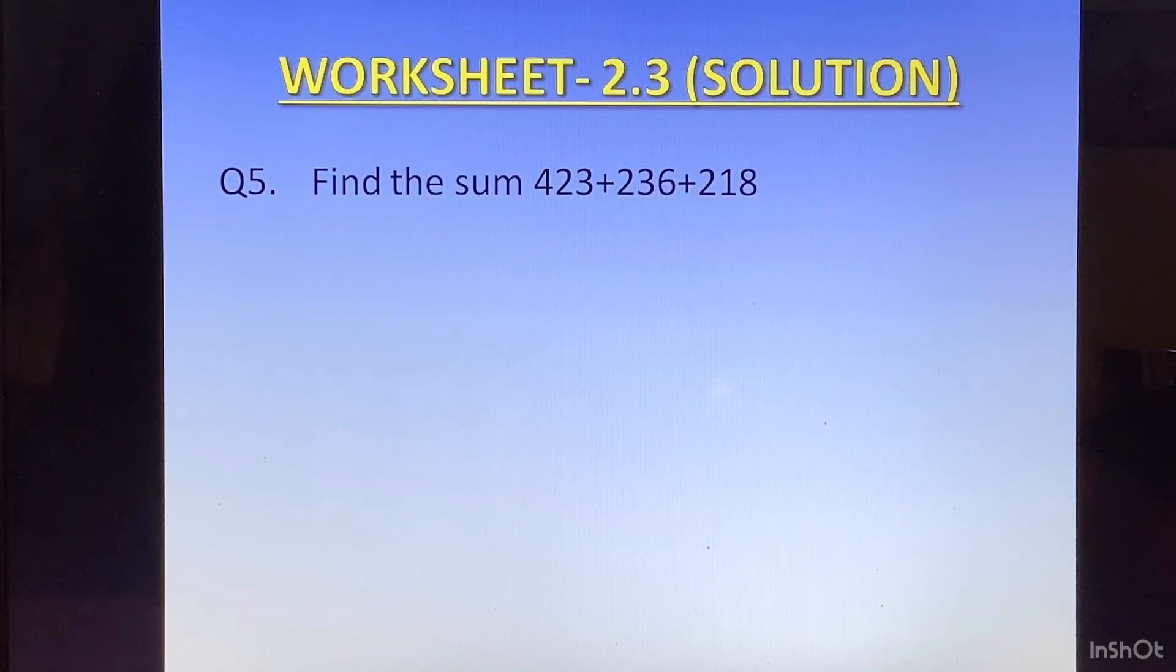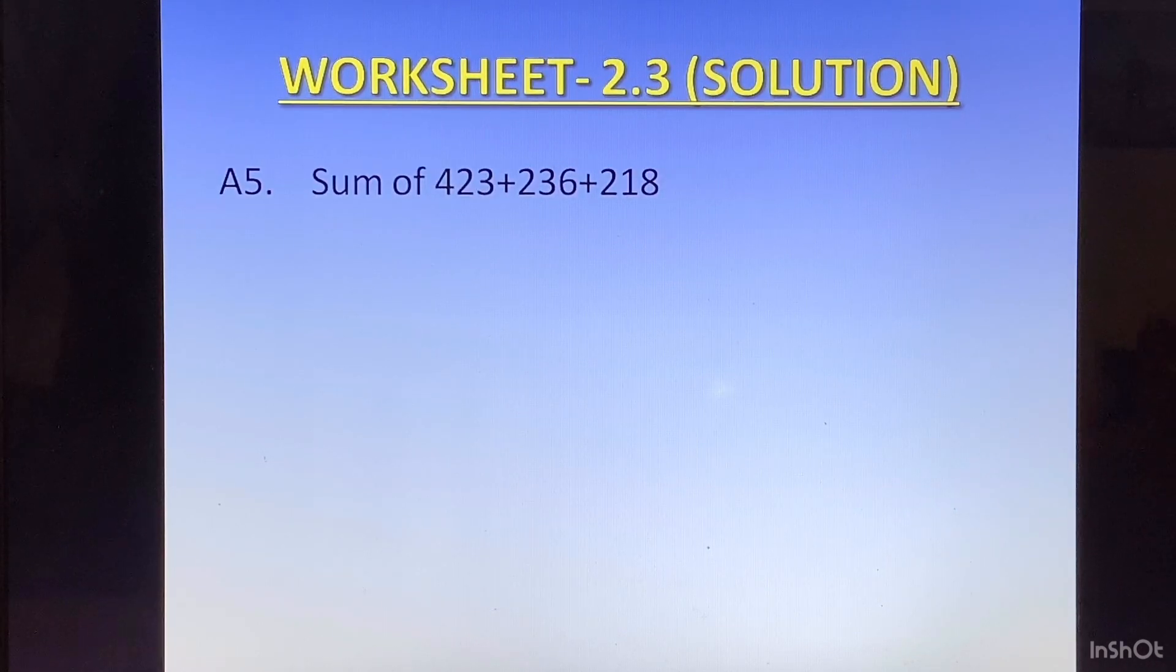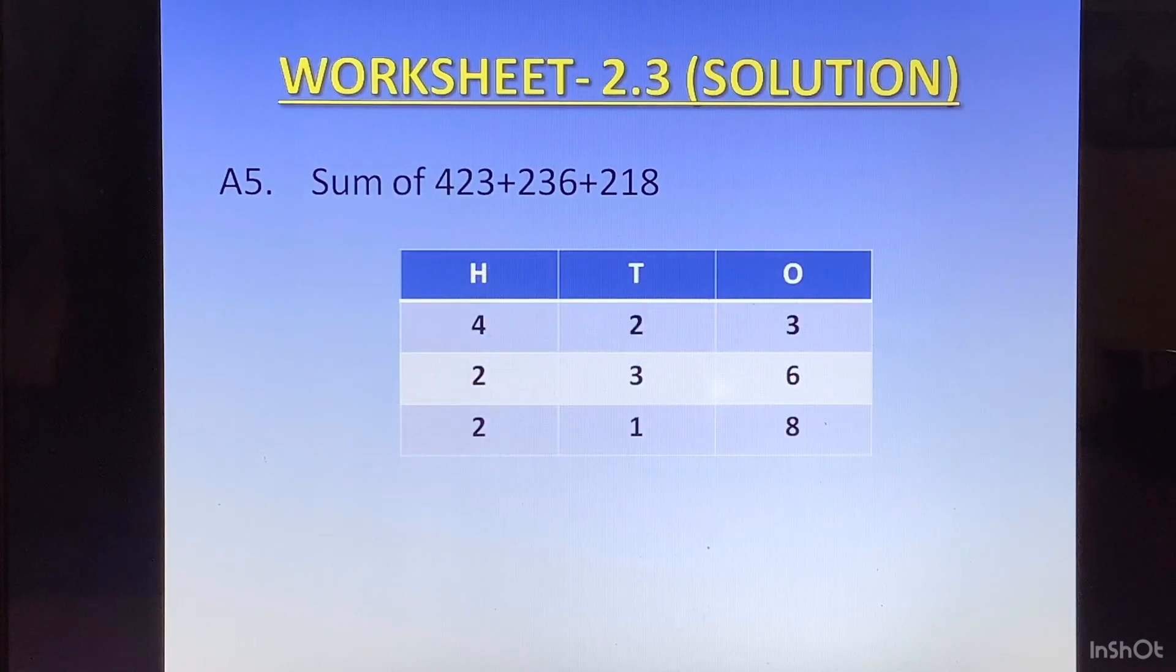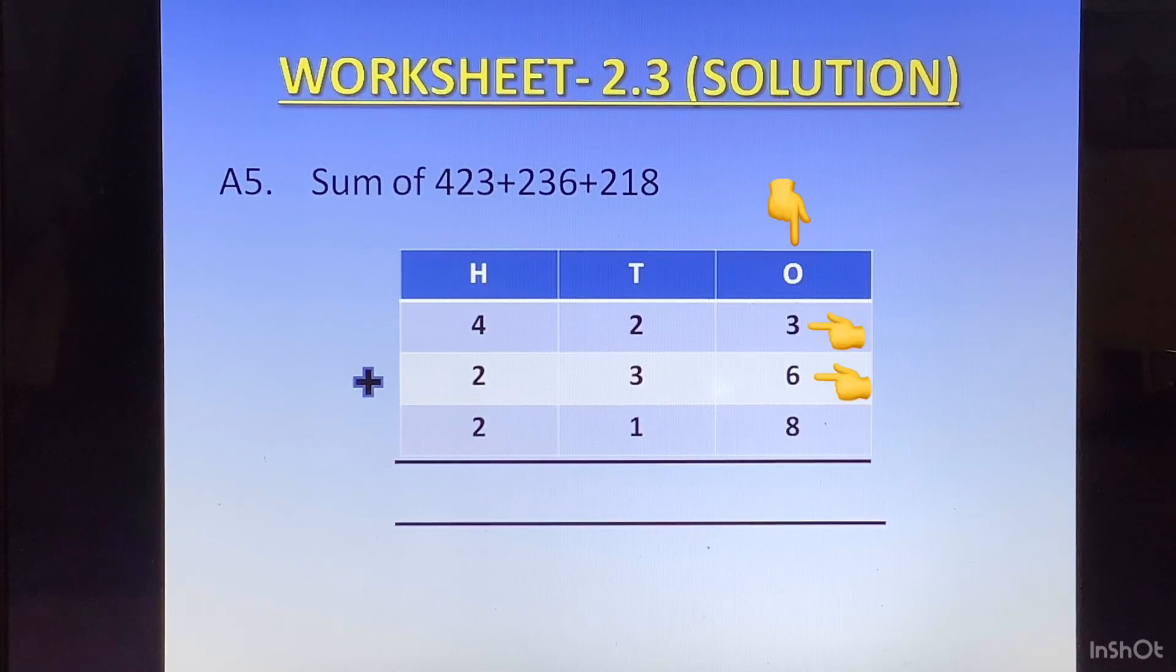Question 5. Find the sum of 423 plus 236 plus 218. For this first we will write it one below the other. They were all 3 digit numbers so there is no problem in writing them one below the other. Put a plus sign and start adding from the ones column. 3 plus 6 is 9, plus 8 is 17. 1 at the top of tens column, 7 at the bottom of ones column.